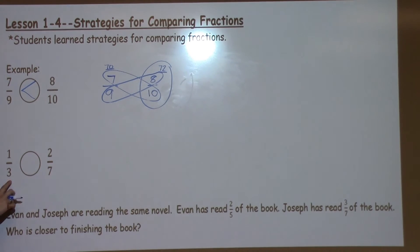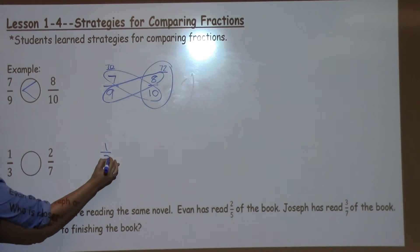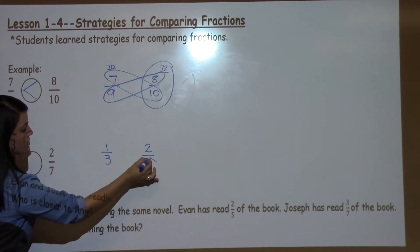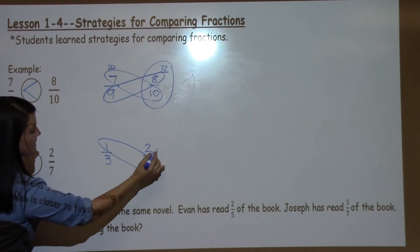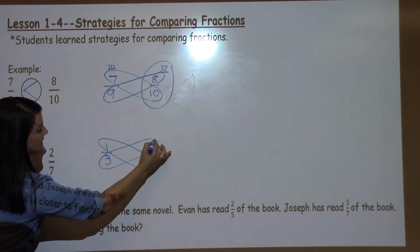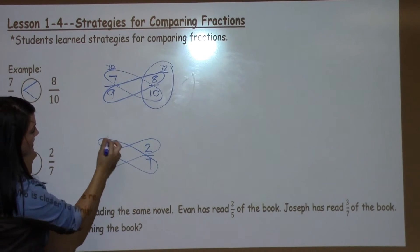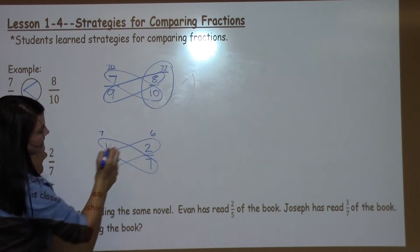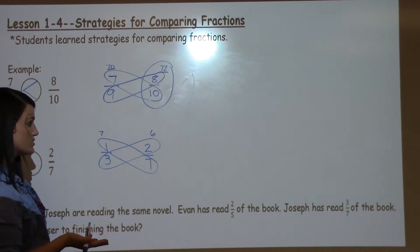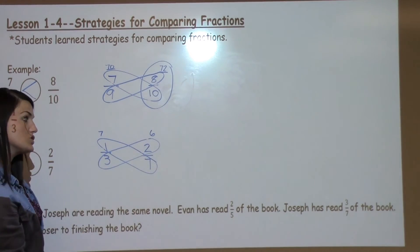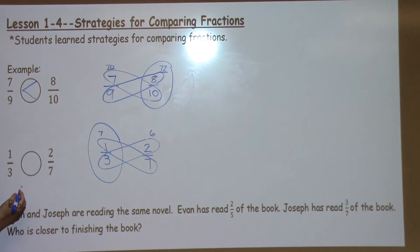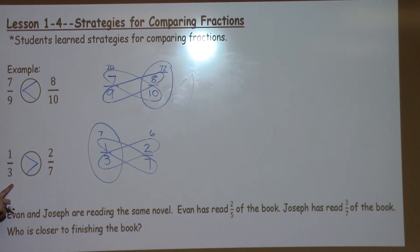So again, another example using the butterfly method. I've got 1 third and 2 sevenths. I'm going to draw butterfly wings around the two diagonal numbers. 1 times 7 is 7. 3 times 2 is 6. I ask myself which one is larger: 7 or 6. 7 is just a little bit bigger, so therefore 1 third is the larger fraction and I draw my greater than symbol towards the 1 third.